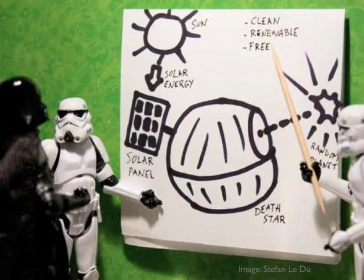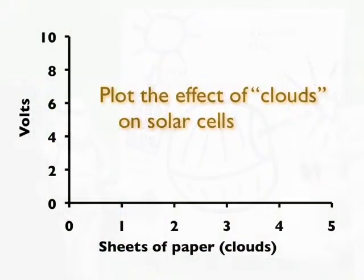Solar cells are great to use in space because sunlight doesn't have to go through the Earth's atmosphere. On Earth, we have to worry about shadows from clouds covering our solar cells. Plot the effect of clouds on solar cells. We will use sheets of paper as clouds to cover the panels.